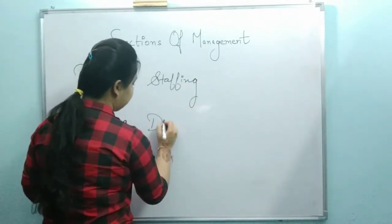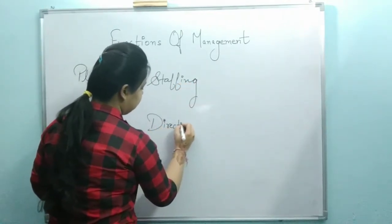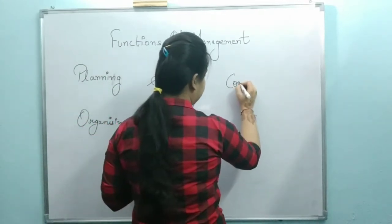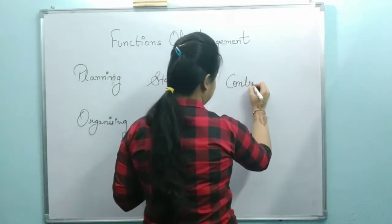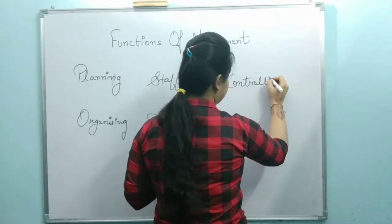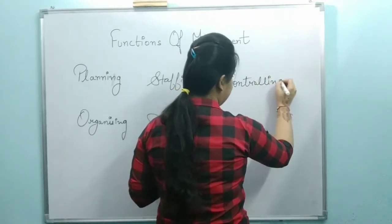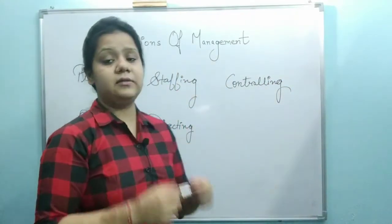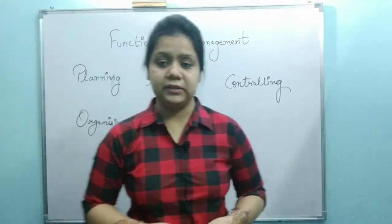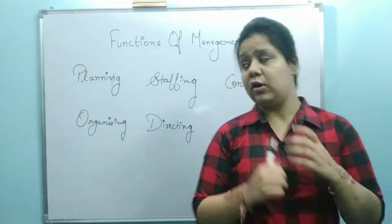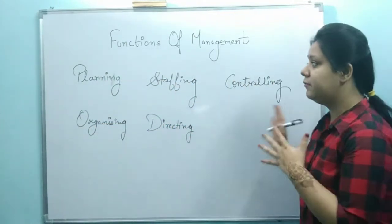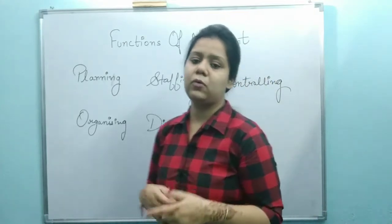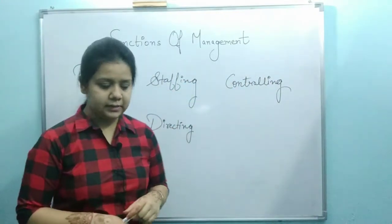These activities include Directing and Controlling. These are the activities a manager performs in the organization to achieve desired objectives, and these are our management functions. We will discuss all of them one by one.